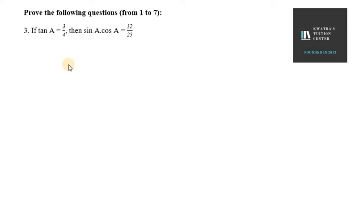Hello everyone, let's start with question number 3. In this it says if tan A equals 3 over 4, then we have to find the value of sin A cos A as 12 over 25.